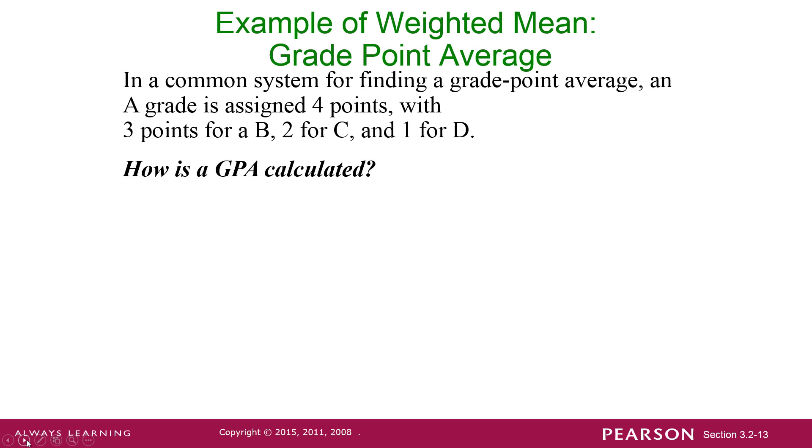We talked about how to calculate a GPA. This is a different kind of mean. It's called a weighted mean. Because if you get, for example, an A and a B, it doesn't necessarily mean that you add 4 and 3 and divide by 2 to get 3.5.